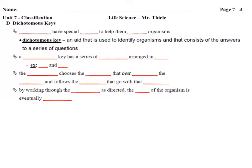We just talked about the field of taxonomy, where scientists classify living things and give them their scientific names — the combination of the genus and the species. Now, in order to study new organisms and identify them, taxonomists have special guides or tools to help them. One of these tools is called a dichotomous key.